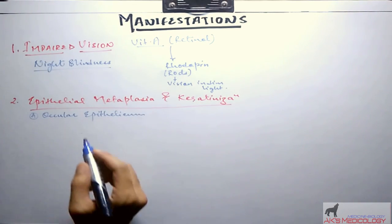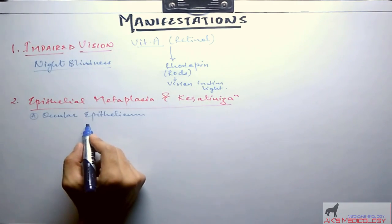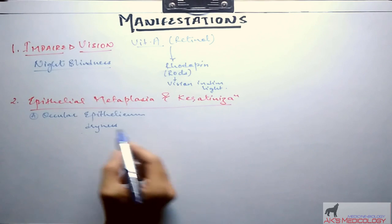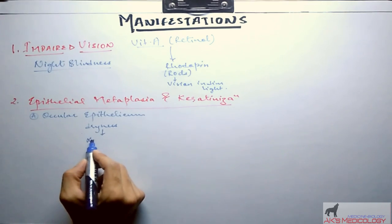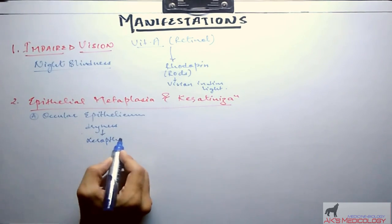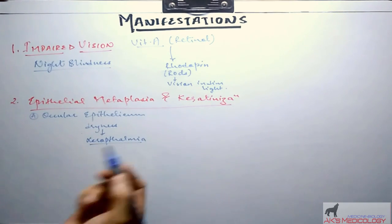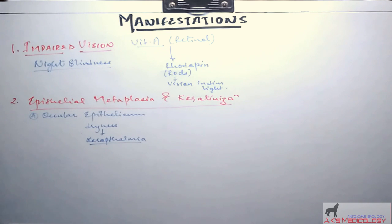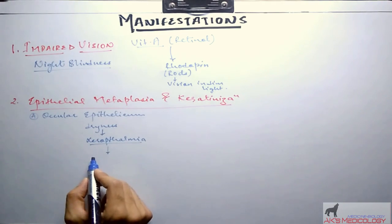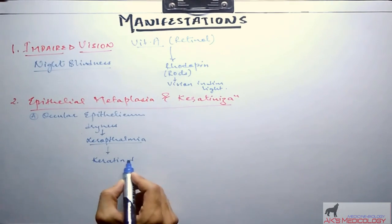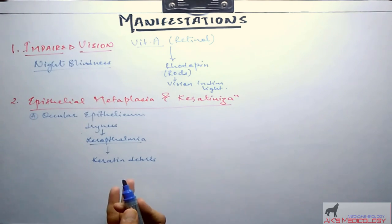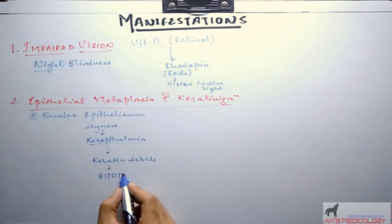Epithelial metaplasia in eyes causes dryness which is called xerophthalmia, and this is the most devastating consequence of vitamin A deficiency in eyes. These dry eyes lead to the deposition of keratin debris which appears as small opaque spots over the cornea, and these are called Bitot's spots.